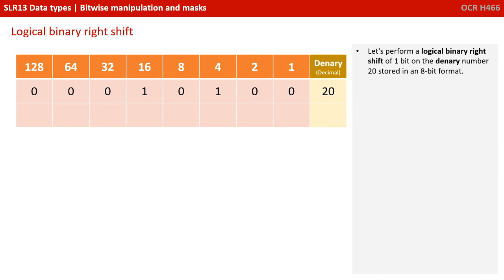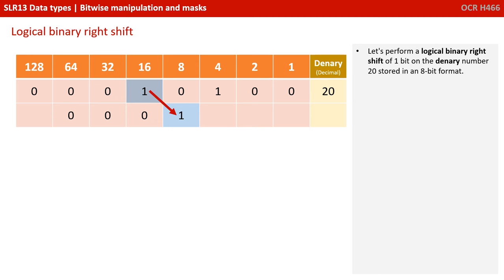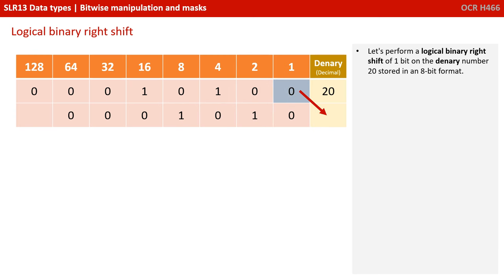A binary right shift is exactly the same, just in the other direction. We shift each digit right the number of places we need. Doing a right shift of 1, the 0 from the 128 column ends up in the 64 column, the 0 in the 64 column ends up right shifted one place in the 32, and so on and so forth. The final 0 in the 1 column disappears off the right-hand side.